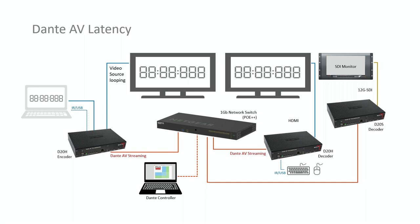As you can see, we have a smaller Dante AV network setup today. We have a host PC running Dante Controller and some rich media content, as well as a stop clock showing hours, minutes, seconds, and milliseconds, which I will also show you. That's going in through a D20 encoder and then on to our Dante AV network, which is managed by our Netgear M4250 PoE++ managed switch. The signal is then being sent out to a D20 decoder and a D20s decoder, and we have a monitor at the end of each of those — one HDMI, one SDI.